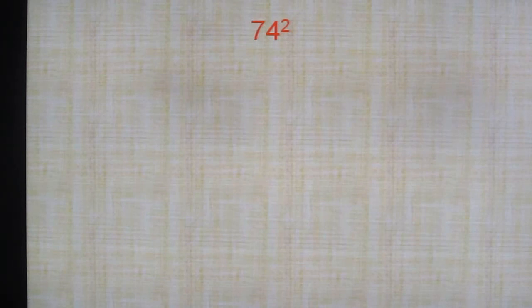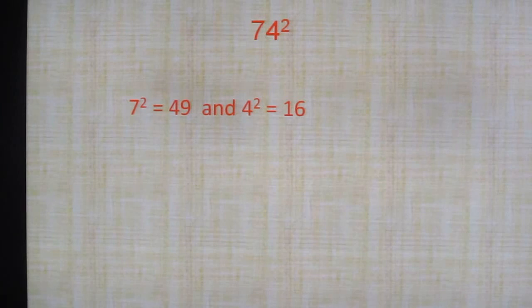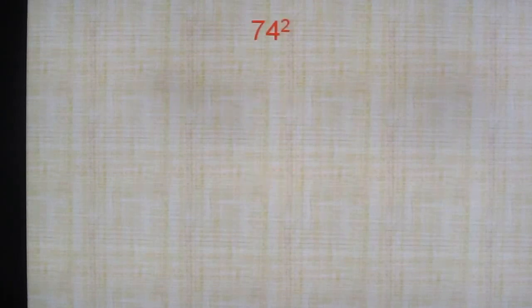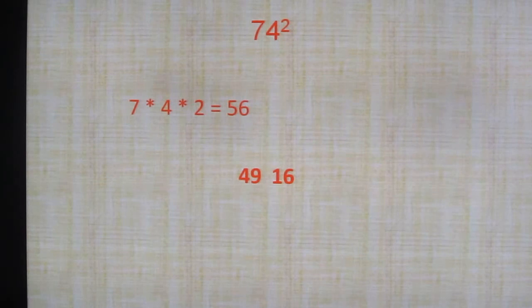74 square. What is 7 square? 49. What is 4 square? 16. So just write 49 and 16 next to each other. Then next, what is the next one we need? 7 times 4 times 2. What is 7 times 4 times 2? 7 into 4, 28. 28 into 2, 56. Now 7 square 49, 4 square 16. And this 56X.